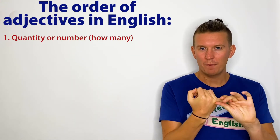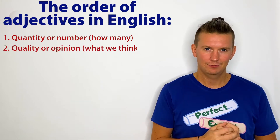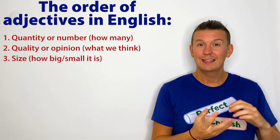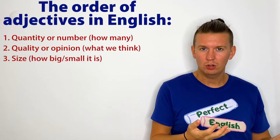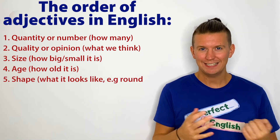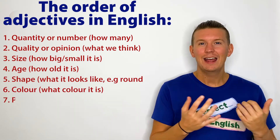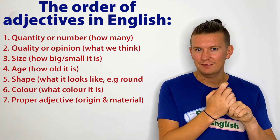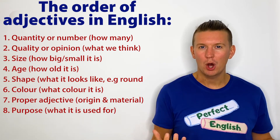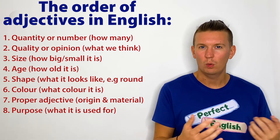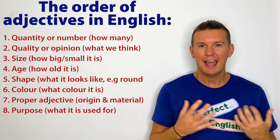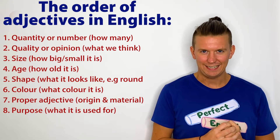Quantity or number comes first — how many are there? Then we have quality or opinion — what do we think about it? And size — is it big or small? Age — how old is it? Shape — what shape is it? Colour — what colour is it? Then we have proper adjectives — where is it from, and what is it made of? And finally, the purpose — what do we use it for? So we have eight kinds of adjectives, eight kinds of descriptive words in English.